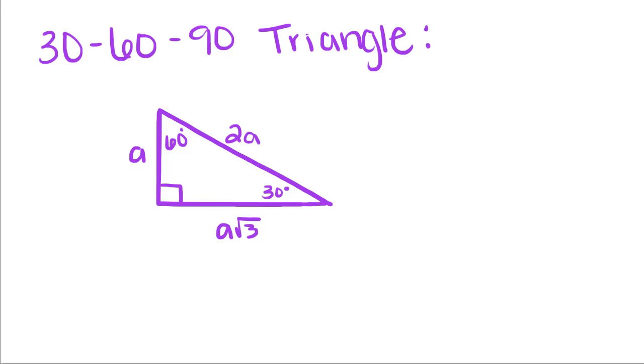Now we're going to talk about another kind of triangle that has its own special rules. It's called the 30-60-90 triangle, and these numbers are the measures of the angles. It's a right triangle, so it has a 90 degree angle which is right here, this angle is 30 degrees, and this angle is 60 degrees.